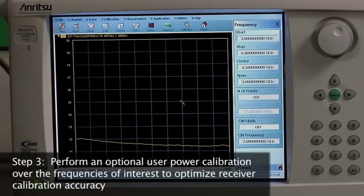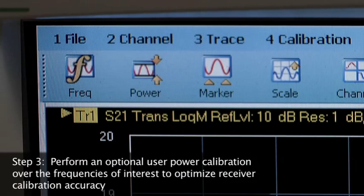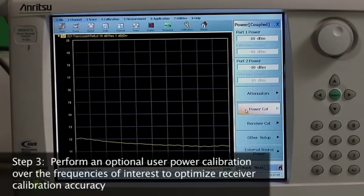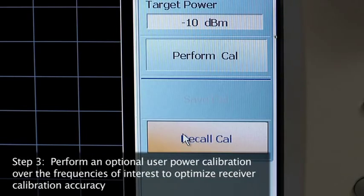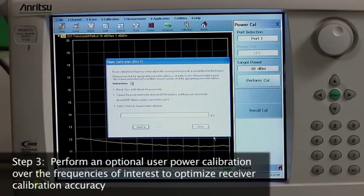Once the composite receiver has been constructed, we are ready to calibrate the receiver. To get the highest measurement quality, it's recommended to first perform a power calibration of the test port over the frequencies of interest to optimize receiver calibration accuracy. This, step three, is optional. A user power calibration is a basic VNA operation, so we will just remind you where to locate the power calibration feature.